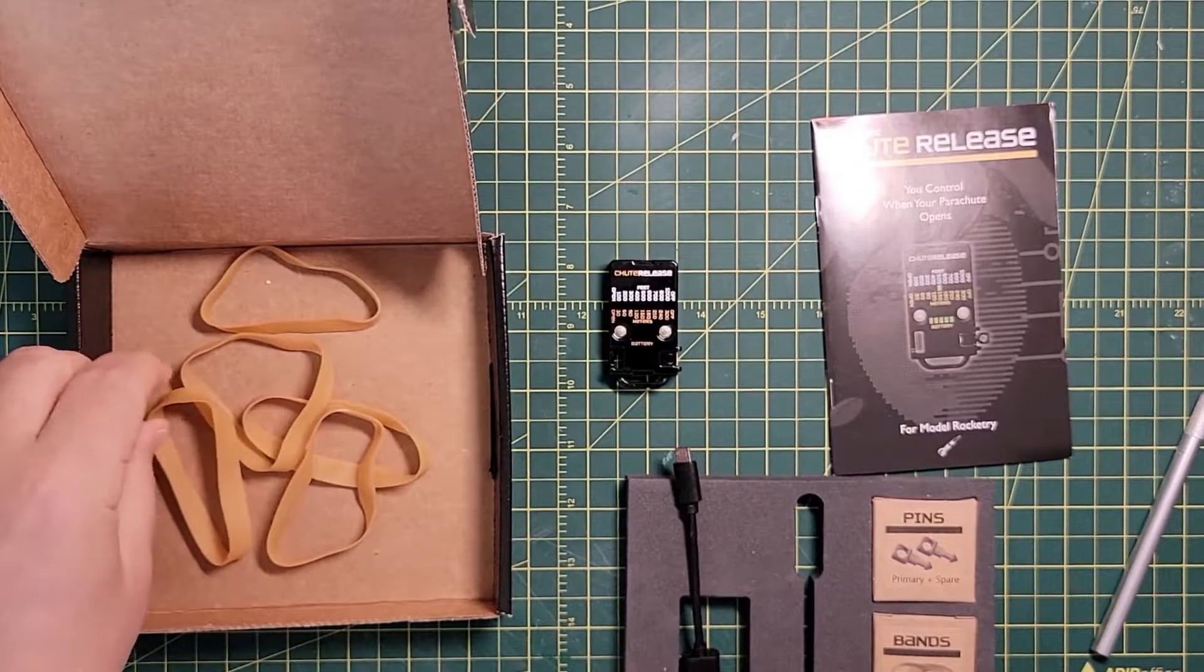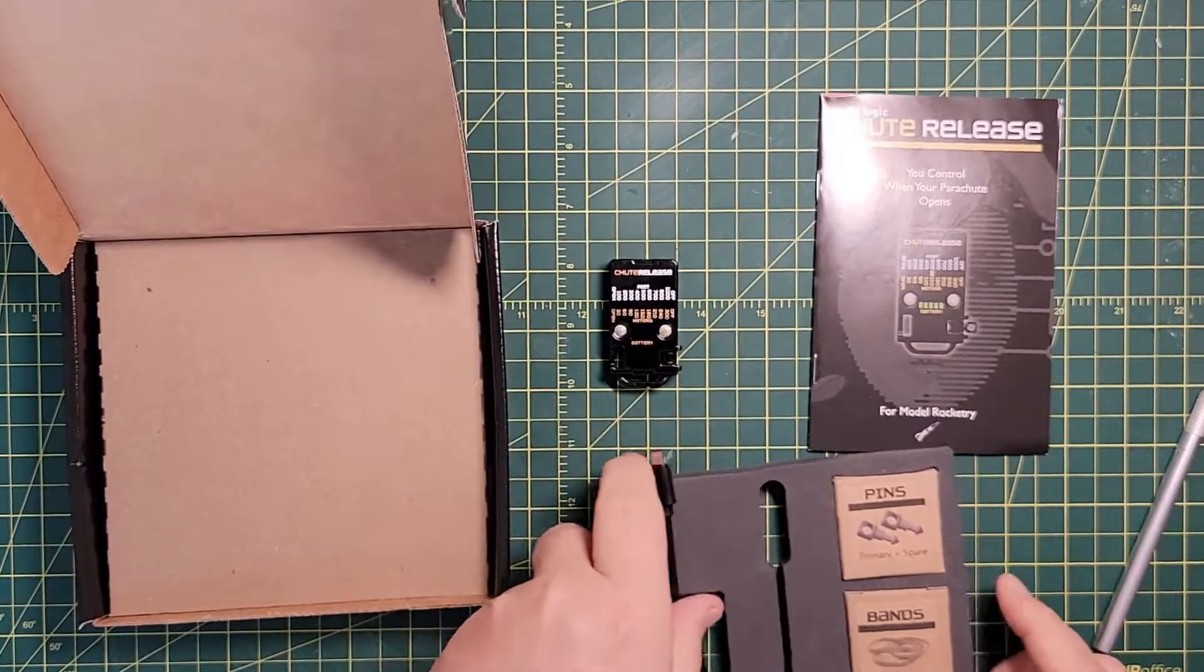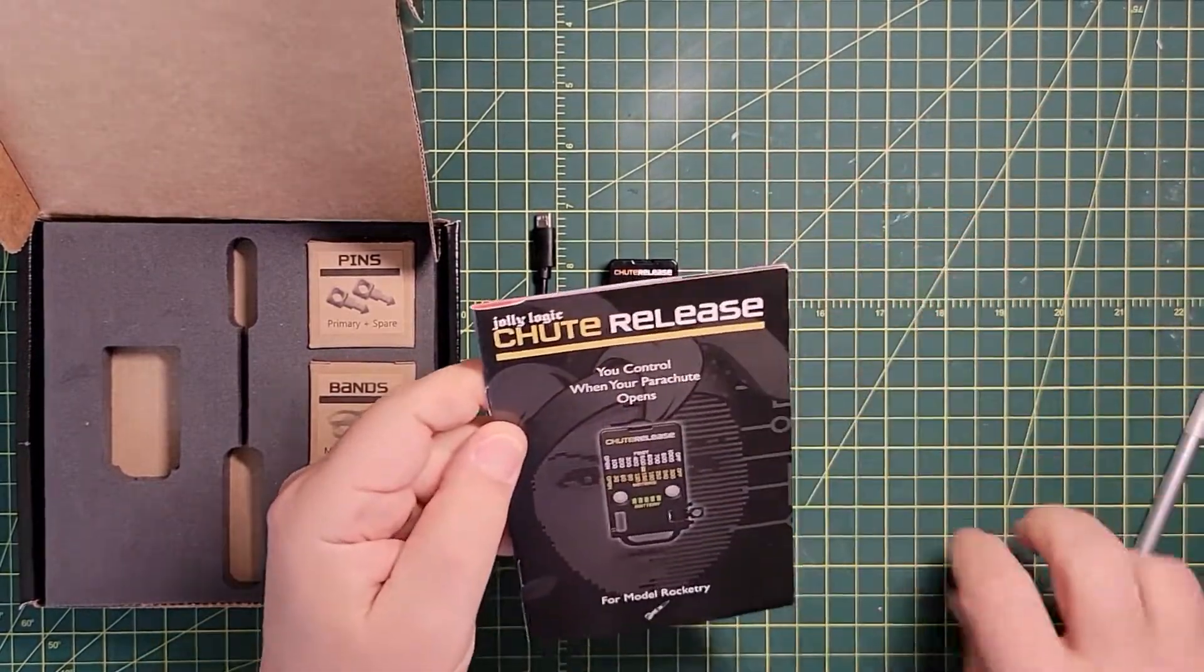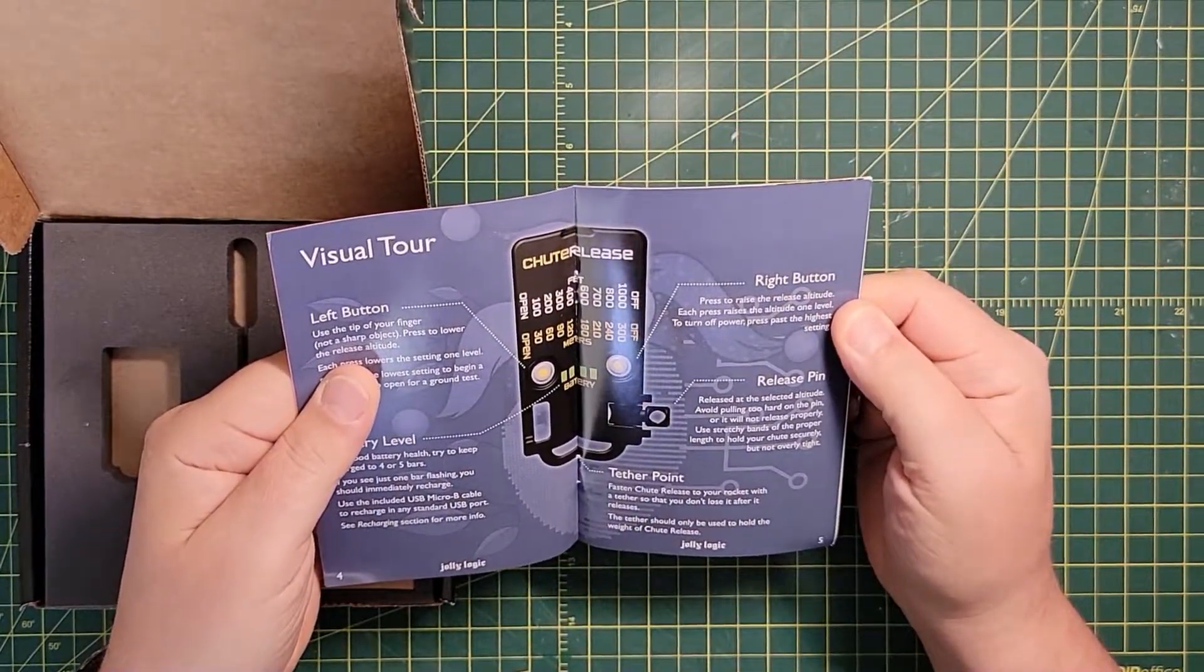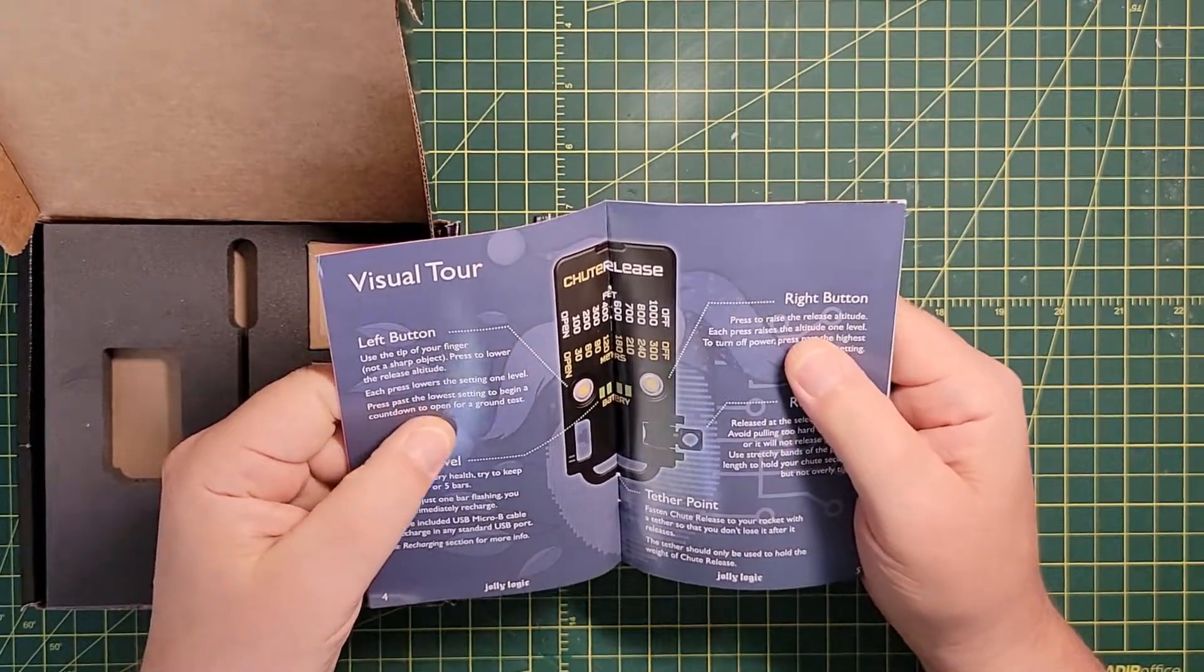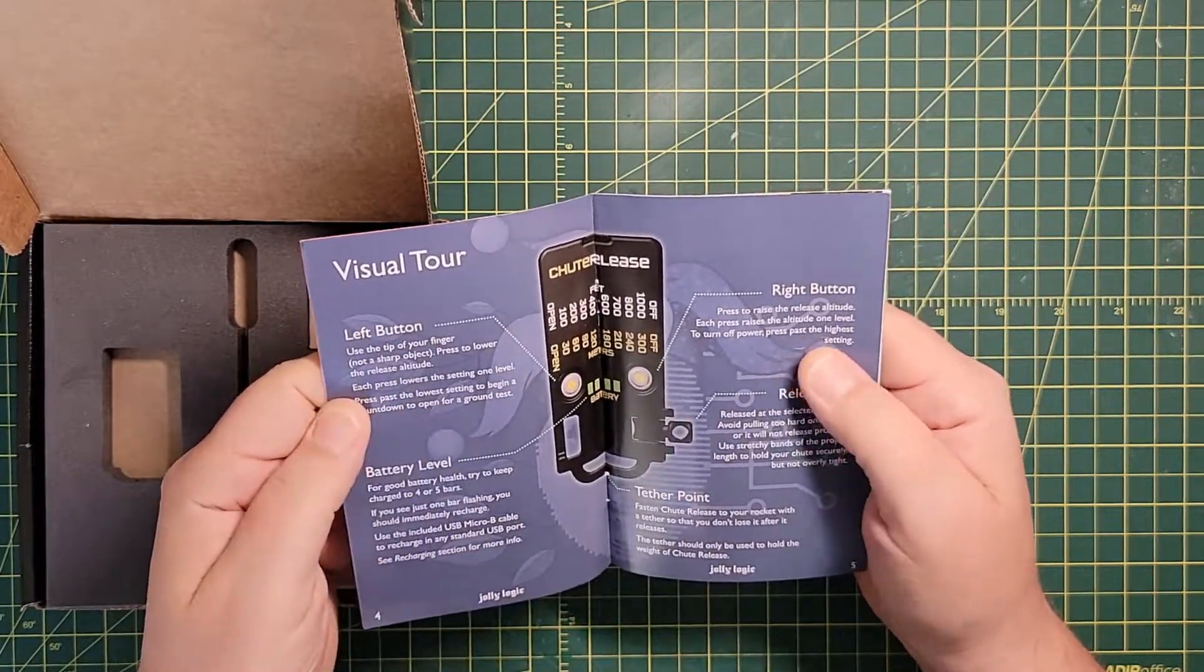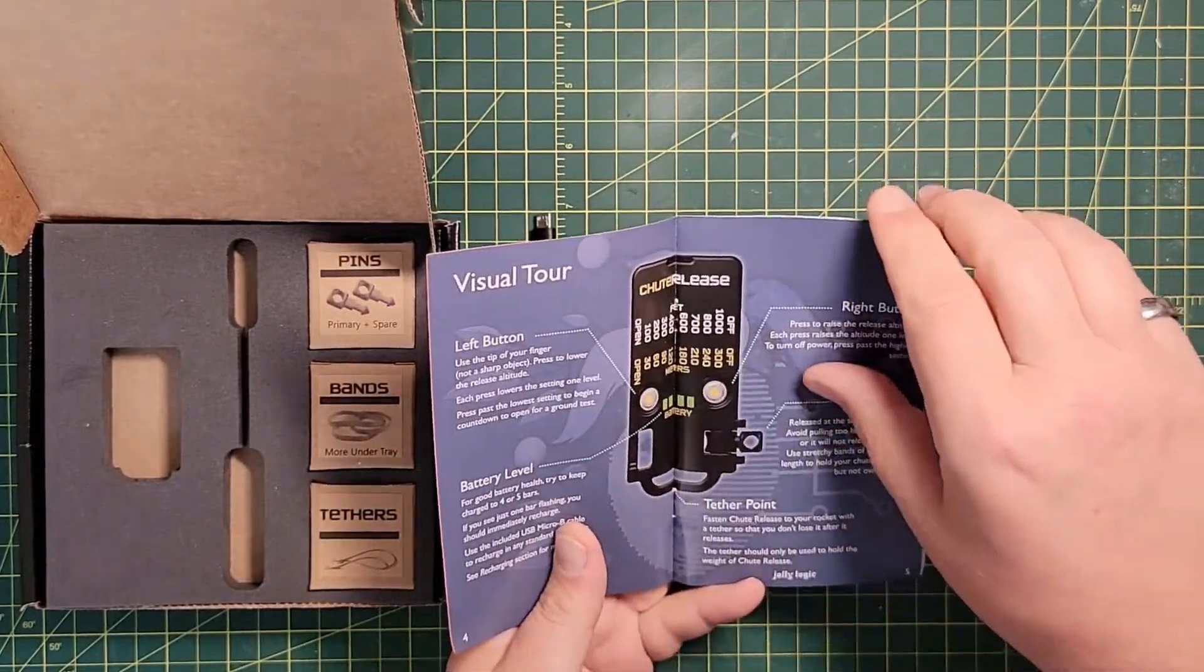We've got a couple different sizes, it looks like. It's nice that it comes with a whole bunch of rubber bands. That's very cool. It comes with spare rubber bands, and it even comes with tethers. Left button, you can change the altitude. Right button, raise the altitude. It tells you what the battery level is. Tether point, and it comes with tethers, which is nice.